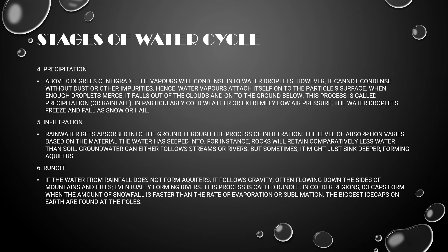Fourth is precipitation. Above zero degrees centigrade, the vapor will condense into water droplets; however, it cannot condense without dust or other impurities. Hence, water vapors attach themselves onto particle surfaces. When enough droplets merge, it falls out of the clouds and onto the ground below. This process is called precipitation.